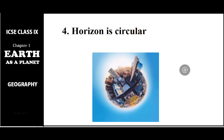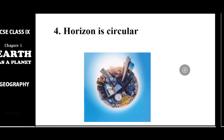The next proof is the horizon — the total area we can see at eye level. If you stand on top of a tall building, like the Burj Khalifa, and look around, your horizon will be circular. If the earth were flat, this would not happen. So the horizon also helps us conclude that the earth's shape is not flat but spherical.